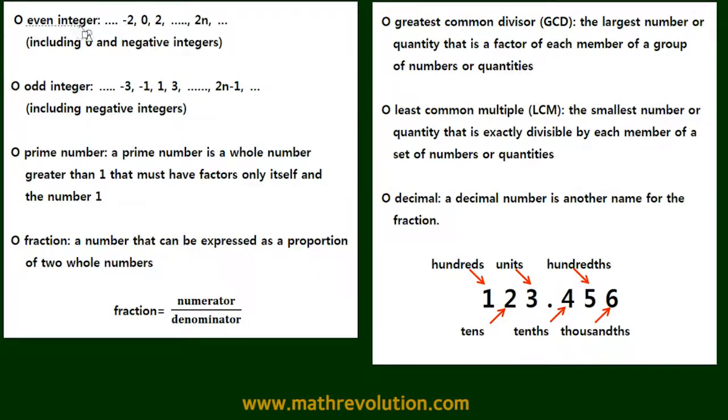Now an even integer or an even number are numbers such as negative 2, 0, 2, and so forth. Now it's important to note that we include 0 as well as the negative integers.